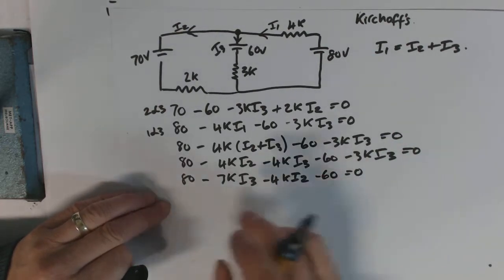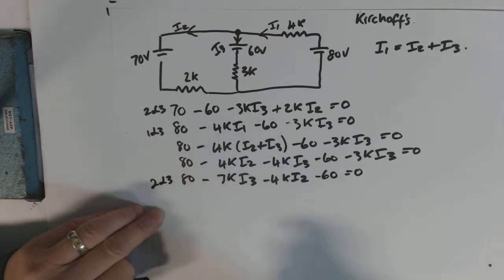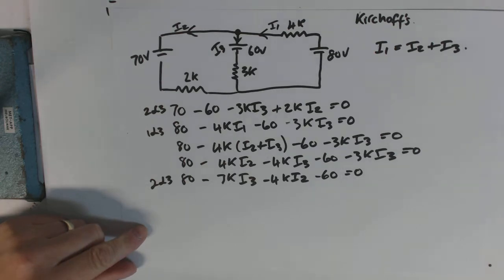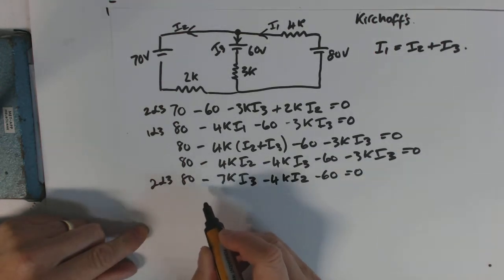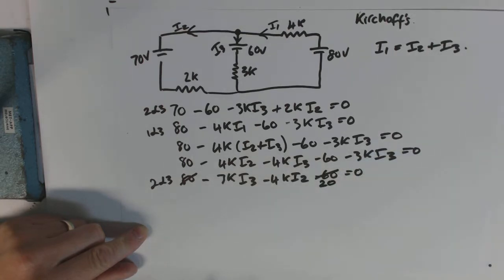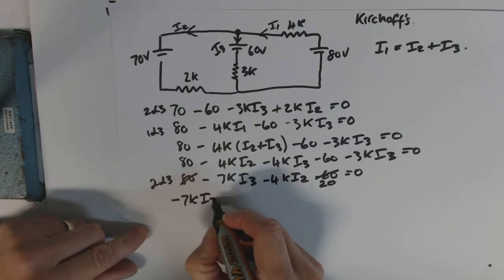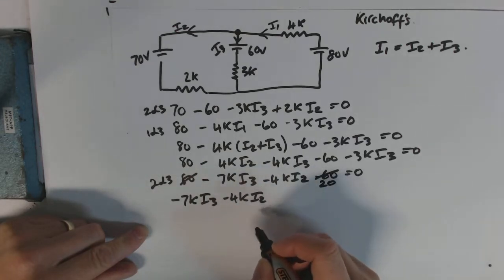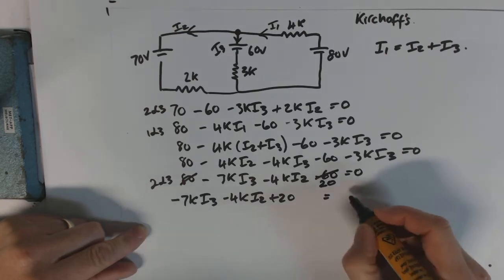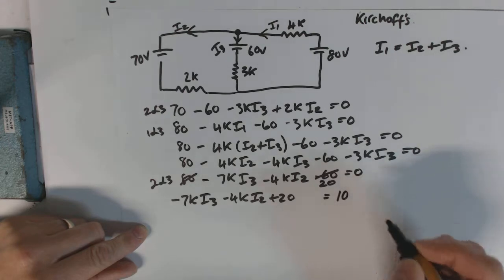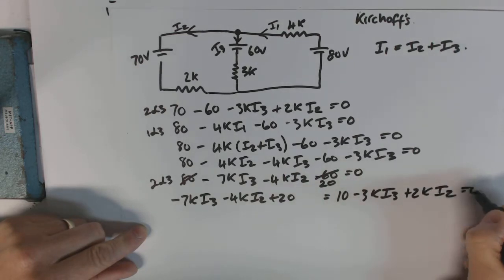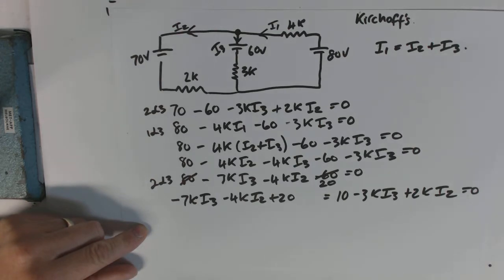Okay, so the other equation that we've got with twos and threes is that first one there. So this is the one where we can now use to sort this all out. So let's just simplify this one though before we go on. This one's got an 80 and a minus 60, so if we get rid of that, 80 minus 60 is 20. So we can write minus 7k I3 minus 4k I2 plus 20, and we'll just make them equal because they both equal zero, so they're both equal each other, equals 70 minus 60 which is 10, 10 minus 3k I3 plus 2k I2.